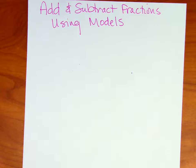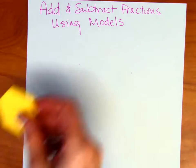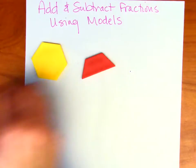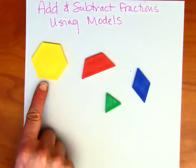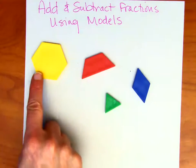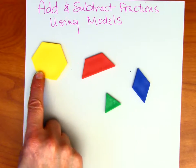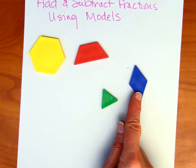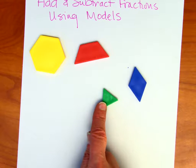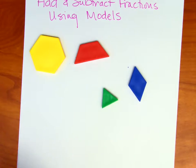Let's look at adding and subtracting fractions, and we're going to use the pattern blocks again just to review. These are the shapes that we're going to be working with: the yellow hexagon equals one whole, the red trapezoid represents one-half, the blue rhombus represents one-third, and the green triangle represents one-sixth.